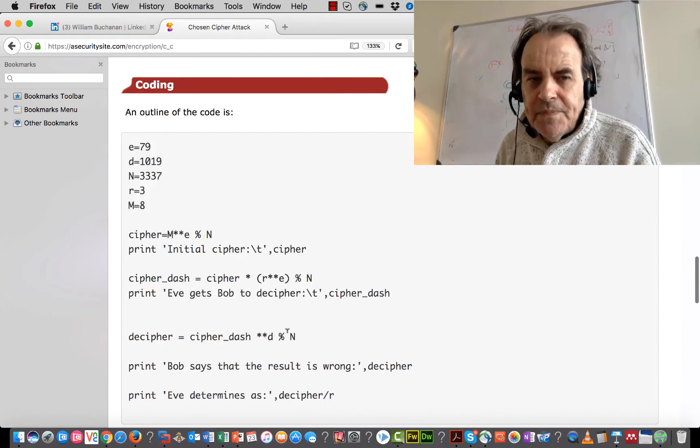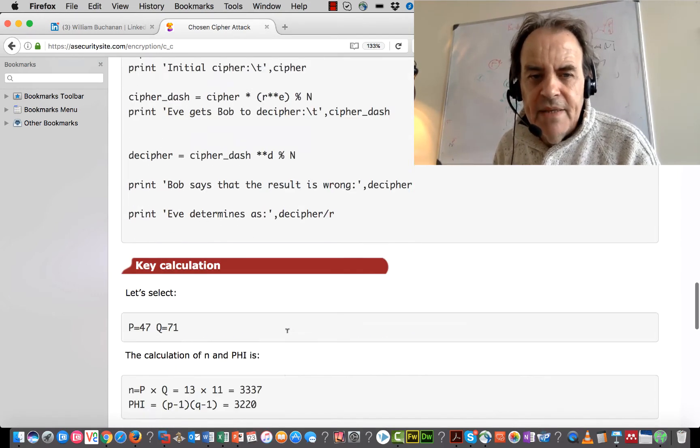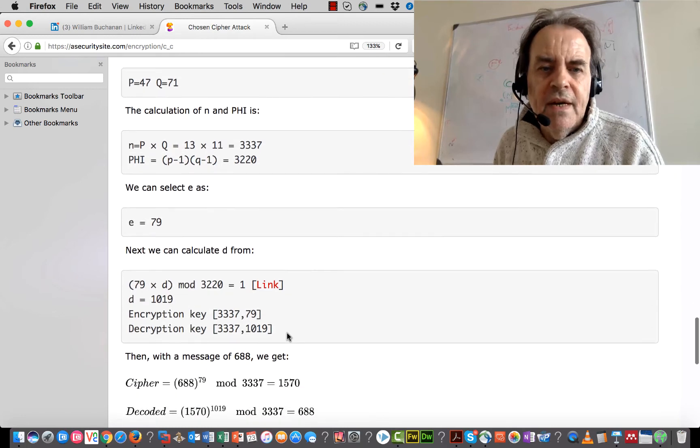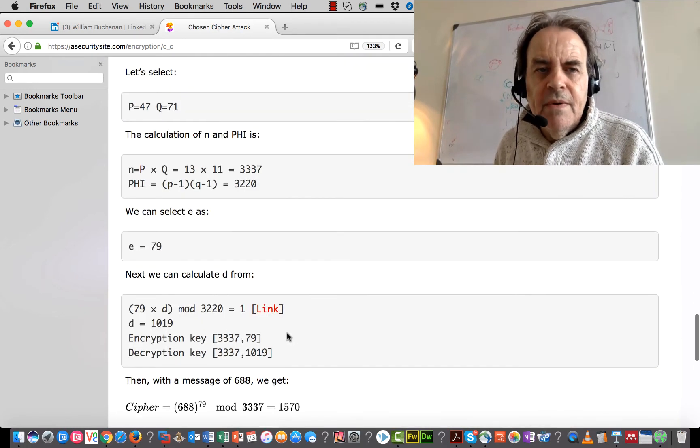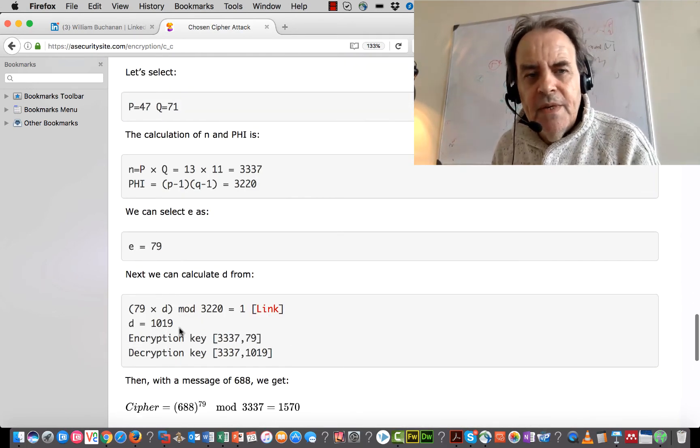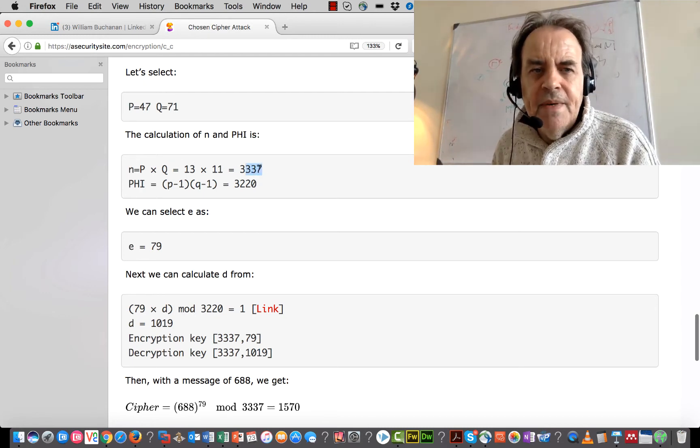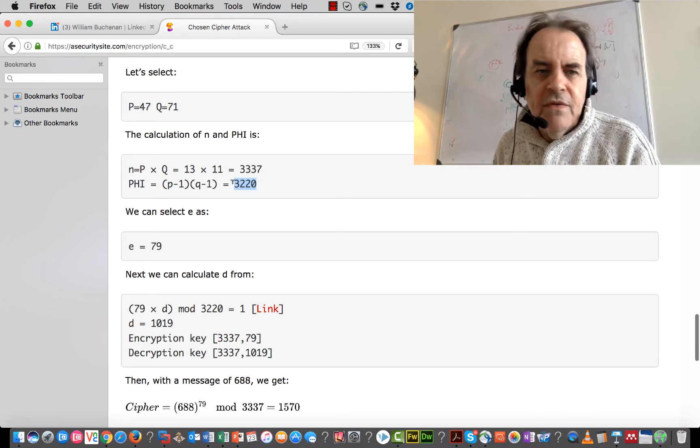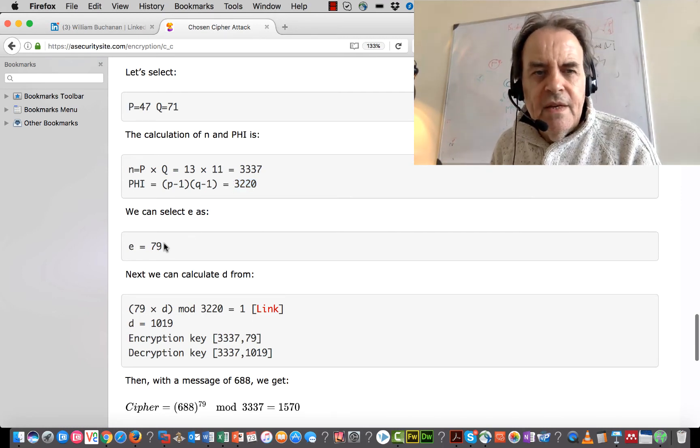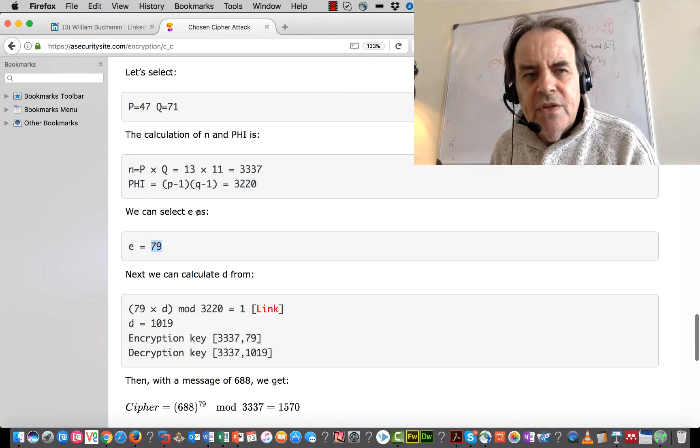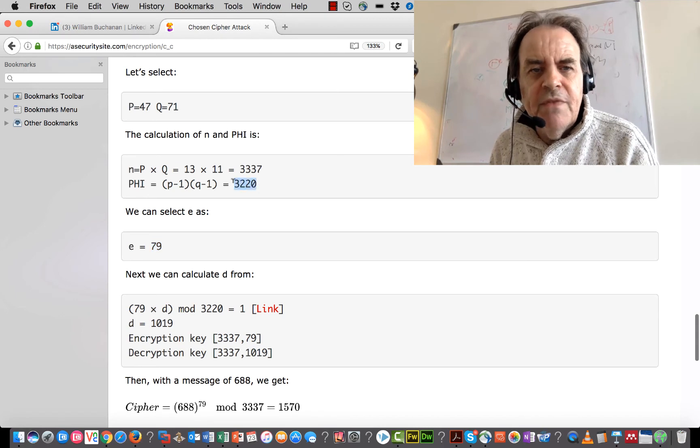So there's the basic Python script for it. But we can see here there's an example. So there's P and Q. We work out a value of N here. We work out a value of Phi. The encryption key we select so it doesn't share any factors with Phi.